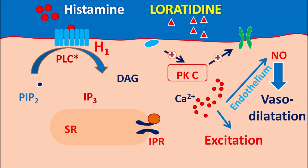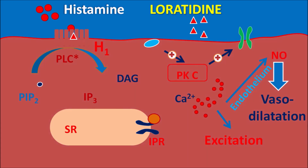Loratadine can selectively block H1 receptors at the periphery without crossing the blood-brain barrier. So it cannot show central actions, but peripherally it blocks H1 receptors. When these receptors are blocked, it reduces the allergic response, making loratadine useful in the treatment of allergic rhinitis.